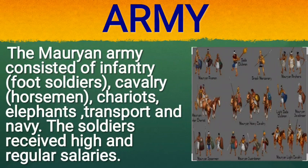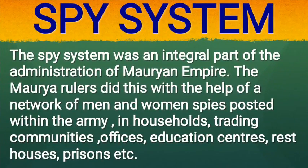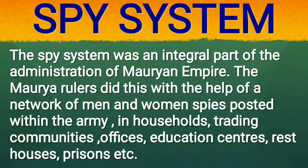The Mauryan army consisted of infantry (foot soldiers), cavalry (horsemen), chariots, elephants, transport, and navy. The soldiers received high and regular salaries. Spy System: According to the Arthashastra, a ruler can ensure justice to his people only when he keeps himself fully informed about the goings-on within his empire. The Maurya rulers did this with the help of a network of men and women spies posted within the army, in households, trading communities, offices, education centers, rest houses, prisons, etc.